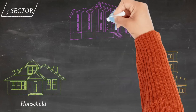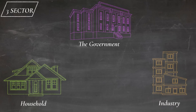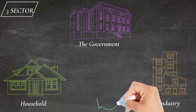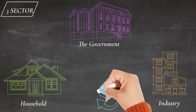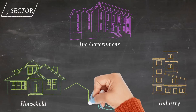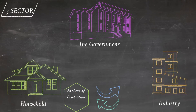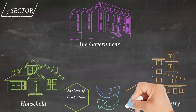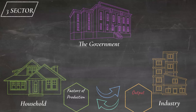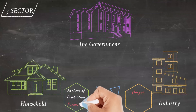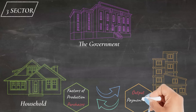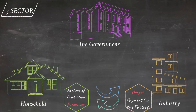The household provides the industry with factors of production that includes land, labor, capital, and entrepreneurship. The industry, comprising of many firms, utilizes these factors of production to create products and services — in other words, the output. This output is purchased by the household. The industry pays for the factors of production in the form of rent, wages, interest, and profit. This is the monetary flow that flows from the industry to the household, while the payments made by the household to purchase goods and services is the money income that flows to the industry.